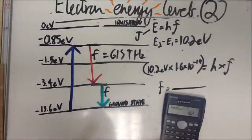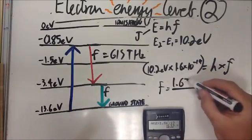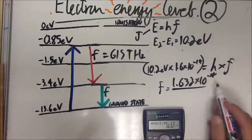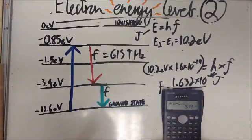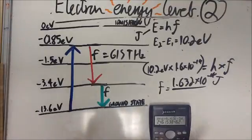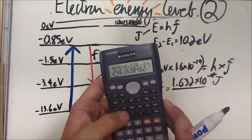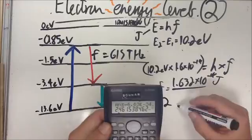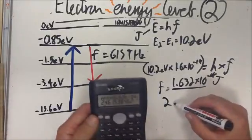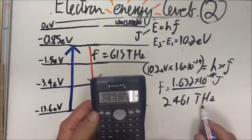So 10.2 times the charge on an electron gives us 1.632 times 10 to the minus 18 joules, divided by H, 6.63 times 10 to the minus 34. And we use the engineering function to get it into some units that we don't mind working with. There we go. So that gives us 2,461 terahertz, which is a phenomenally high frequency here.